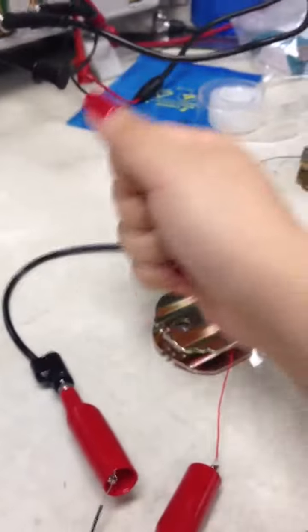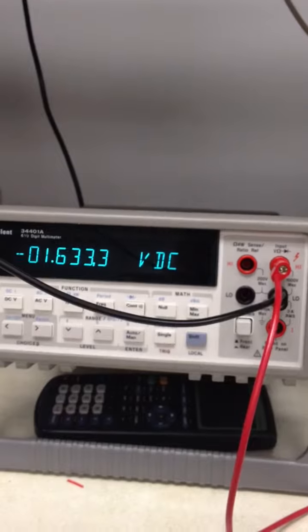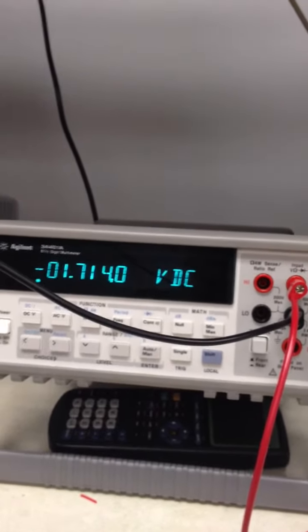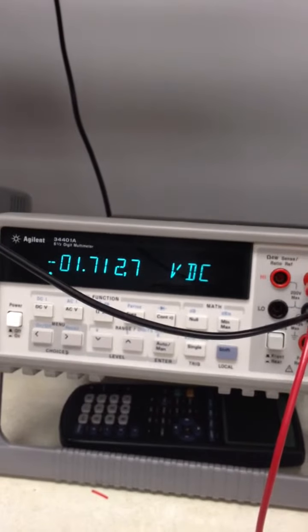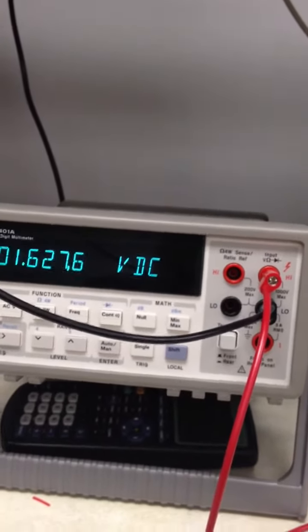Right now it shows 1.7 volts, and as I apply force to the strain gauge, it goes down. When I start applying force it goes up. So that's the change, and now I will show you with the function generator and the oscilloscope.